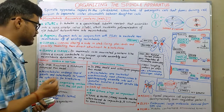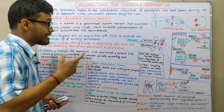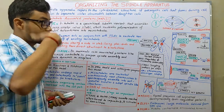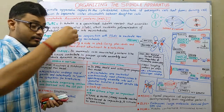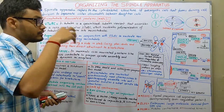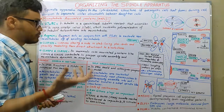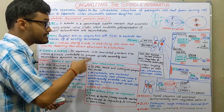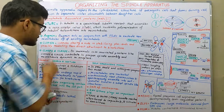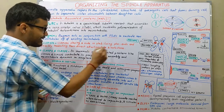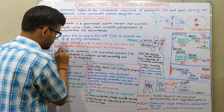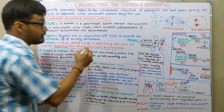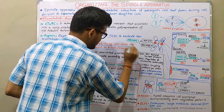The third one is CLIP-170. CLIP-170 plays a role in stabilizing the plus ends of the microtubule. When a microtubule grows from the central zone and rapidly reaches the kinetochore, those ends are known as plus ends. CLIP-170 comes into play and stabilizes those plus ends, possibly mediating their direct attachment with the kinetochore. So CLIP-170 actually mediates direct attachment with the kinetochore and also stabilizes the plus ends of the microtubules.